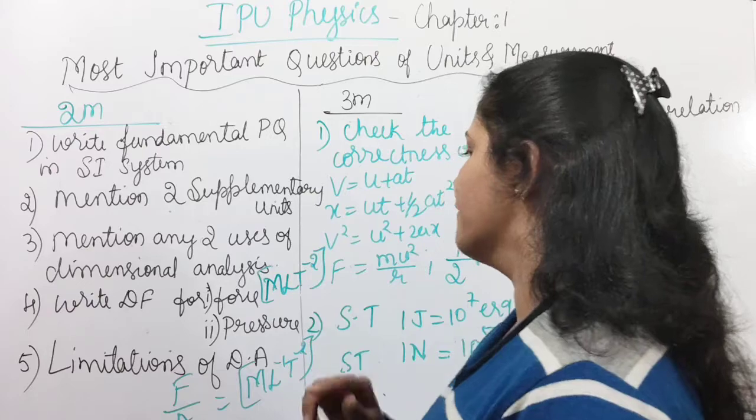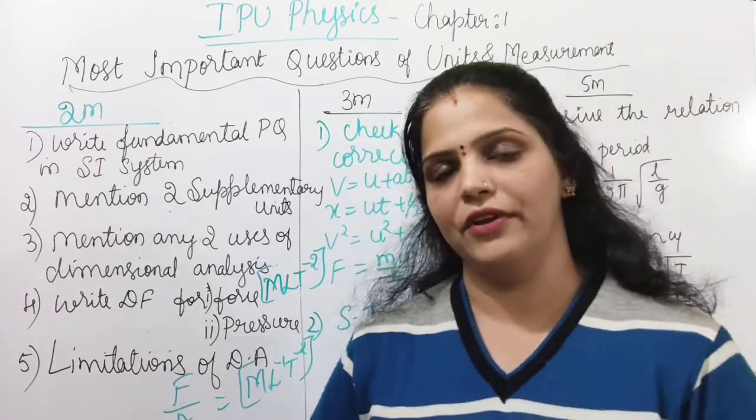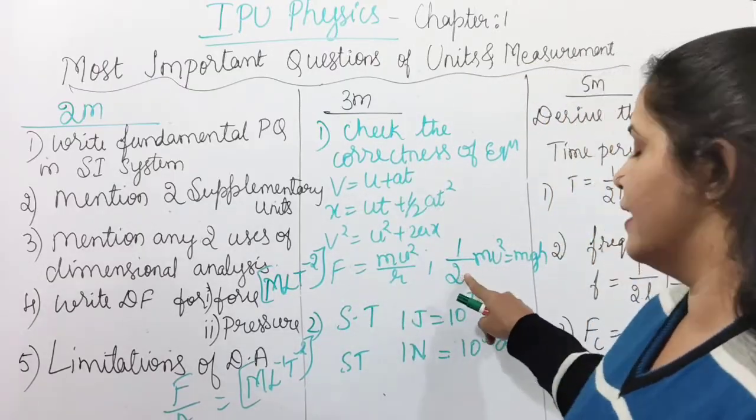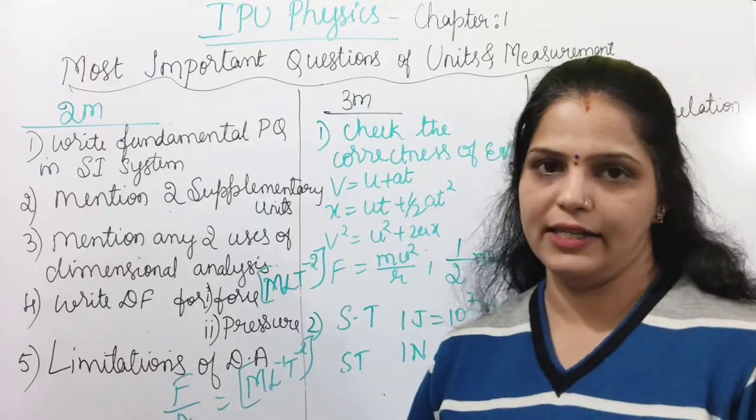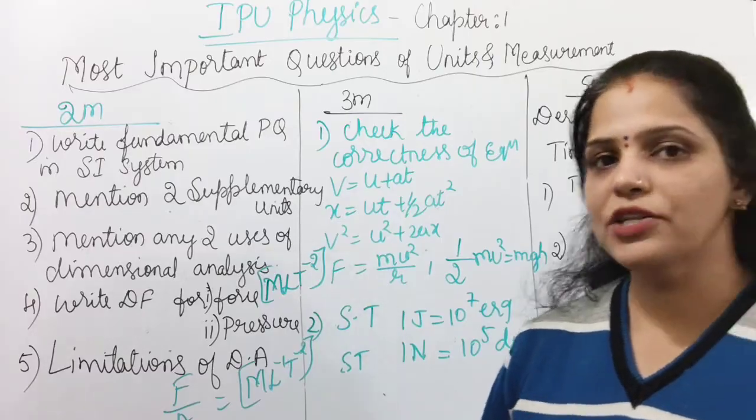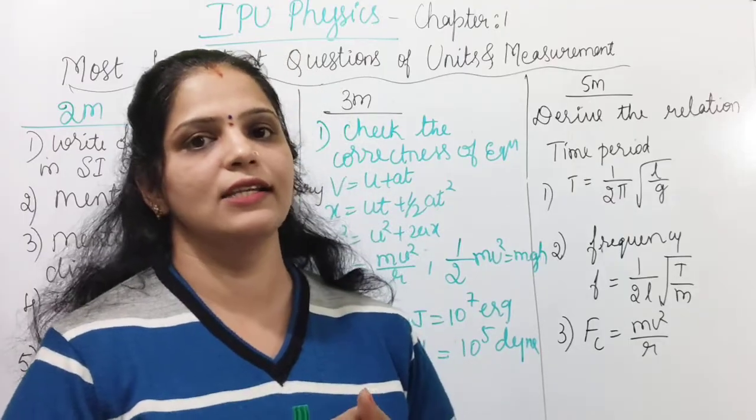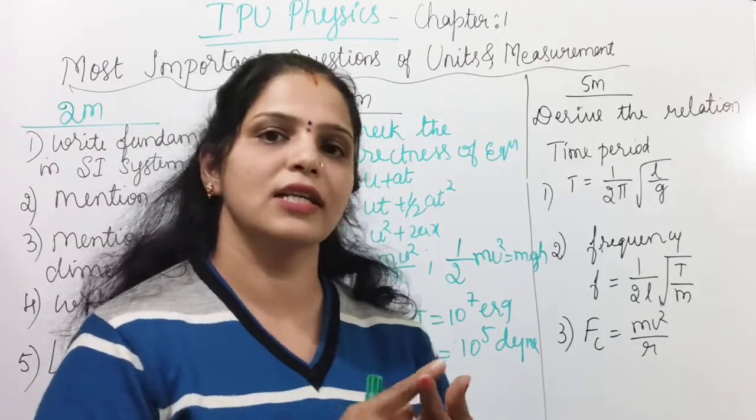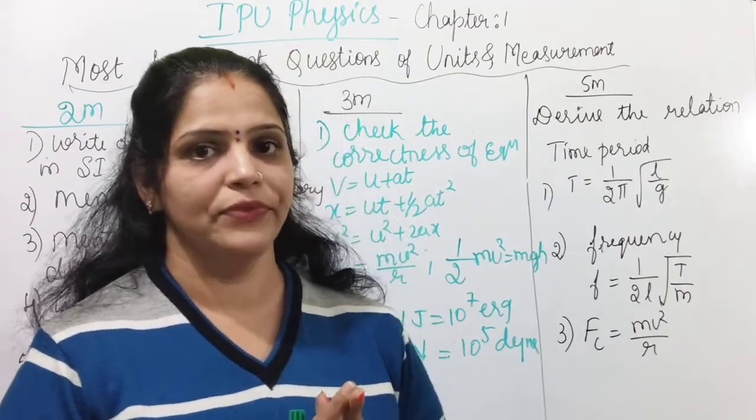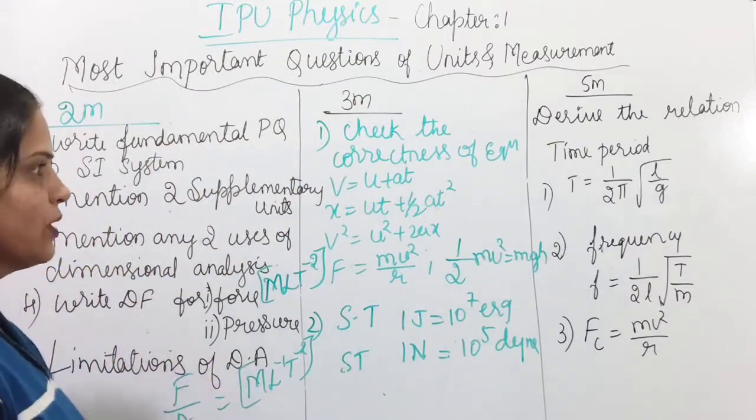Next question is limitations of dimensional analysis. When we are checking the correctness of equation, if there is a number or half is there means we cannot check the correctness of equation. So dimensional analysis fails to derive the relationship between physical quantity if there is a logarithmic function, trigonometric functions, or exponential functions are there. So you just write any two limitations. So practice that, that is one of the important questions.